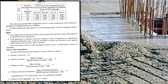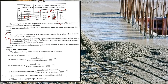Step six is the mix calculation. This step is better understood through numerical problems. We need to identify the coarse and fine aggregate given, the zone of fine aggregate, and the maximum aggregate size — usually 20 mm. Based on that zone, we extract the required values from the table.